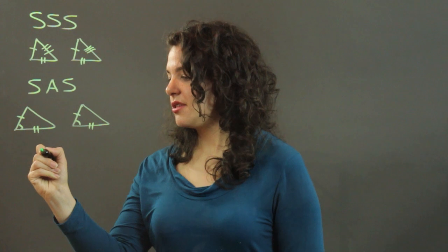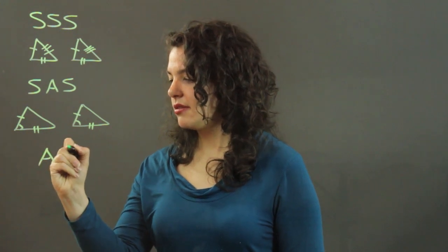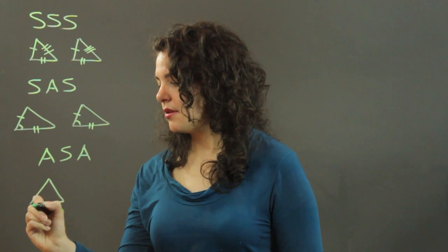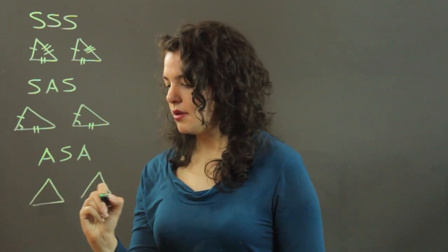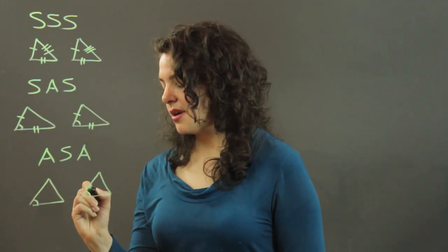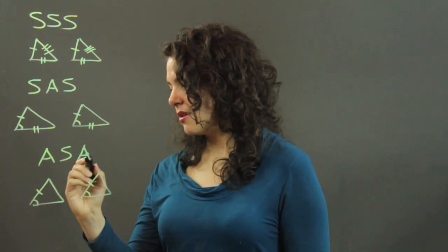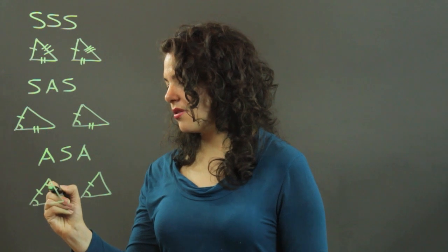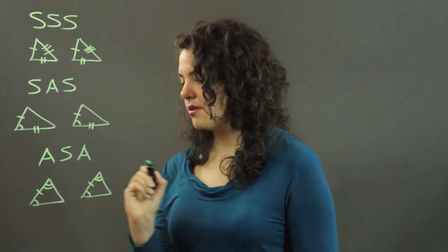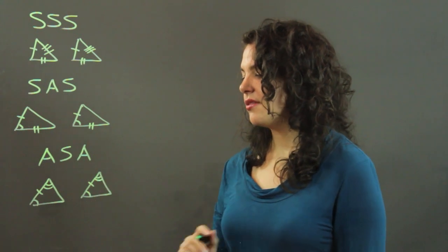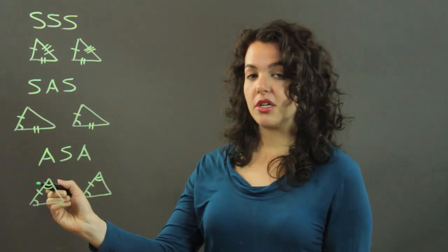And then kind of the inverse of that is the angle-side-angle, where I have one pair of congruent angles, an included congruent pair of sides, and then another pair of congruent angles. Angle-side-angle. Again, it needs to be the included side.